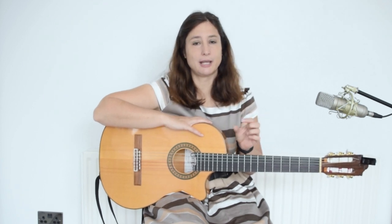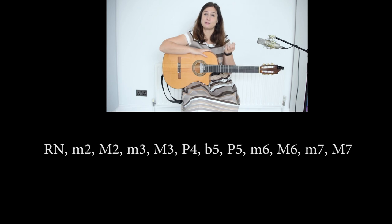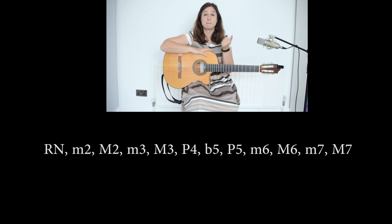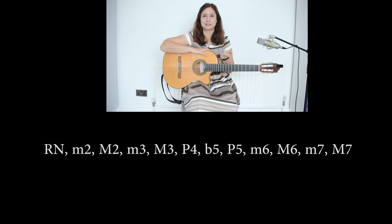Before we have a look at the modes separately, we need to have a look at the intervals because they are the key to realize what the scales are, what chords you can use over them, and why it sounds happy or sad. We have 12 notes which equals 12 intervals, which is the distance between notes. So they are: root note, minor second, major second, minor third, major third, perfect four, flat five, perfect five, minor six, major six, minor seventh, and major seventh.